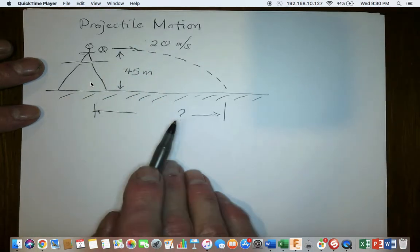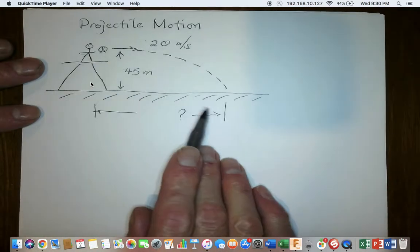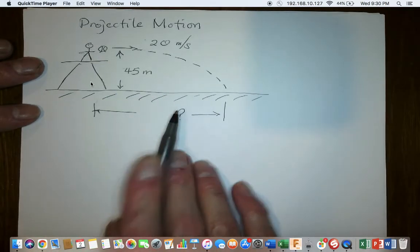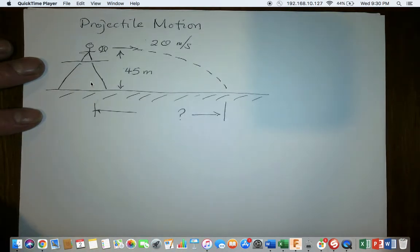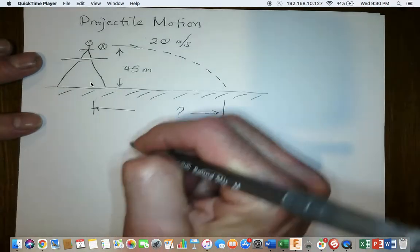Our mission is to find out how far from where it is thrown it lands, how far in the horizontal direction. One approach here is to divide the X motion from the Y motion because with a projectile, the X motion is independent from the Y motion. My suggestion to you is you set up a table.